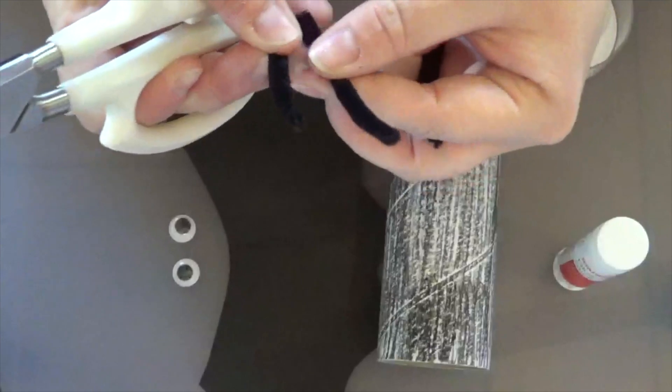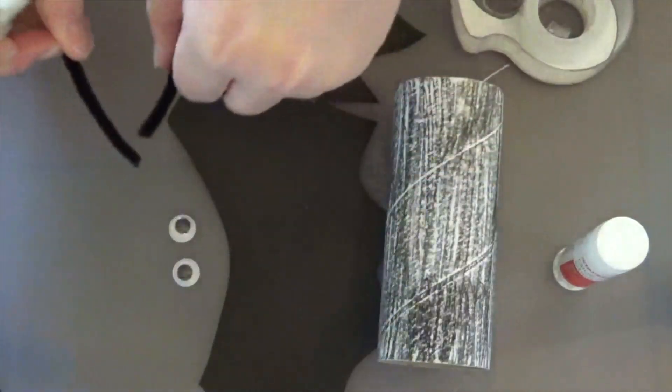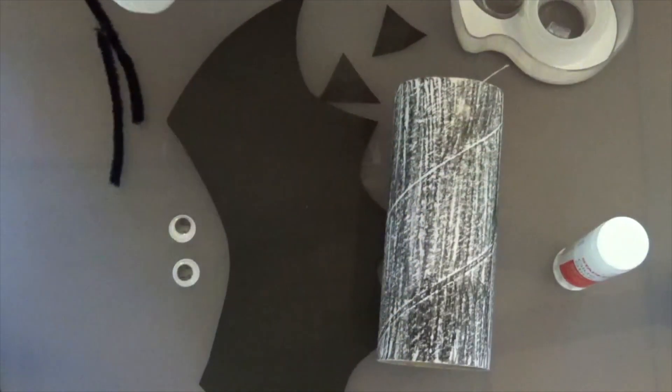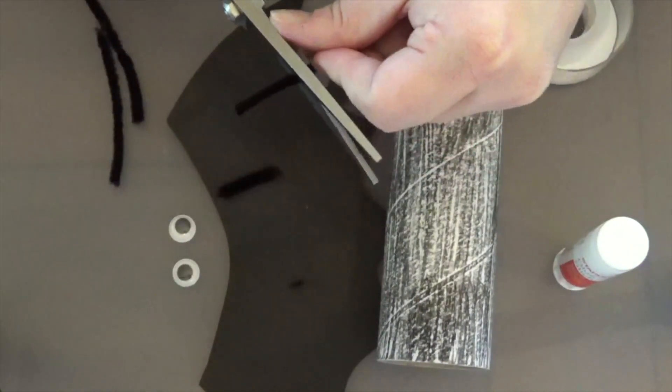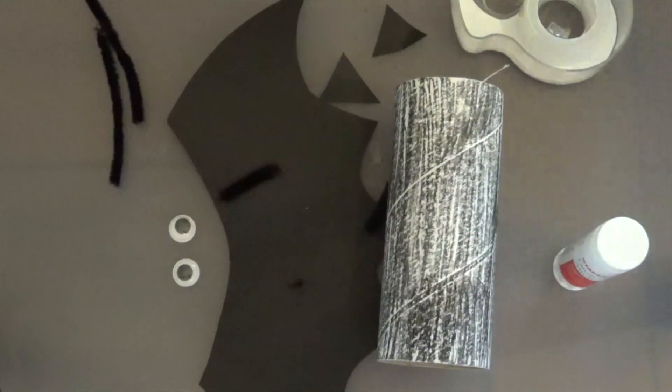So two kind of medium size lengths of your pipe cleaner and then two shorter lengths. These are kind of little shorty guys, cause we're going to make his feet.